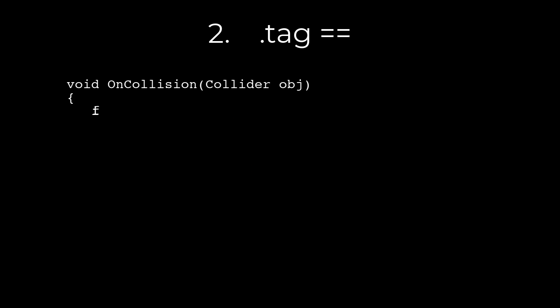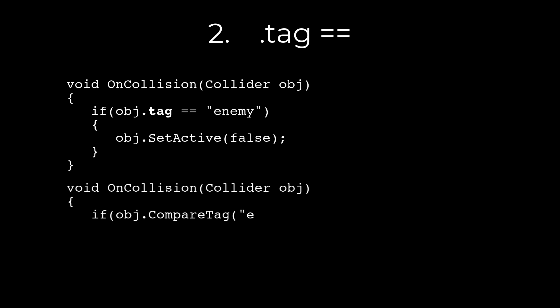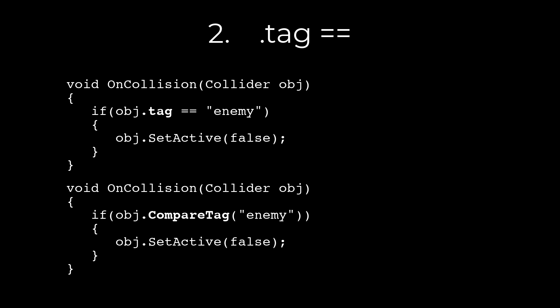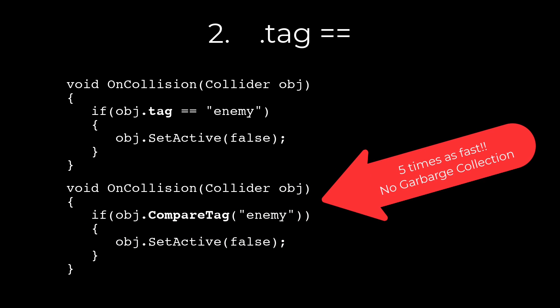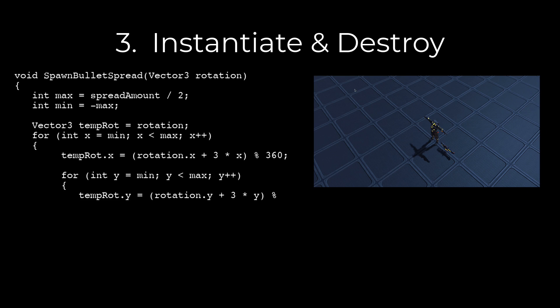Next, there are two ways to compare the tag on a game object. We do this often when we've encountered a physics collision or done a raycast to check if the object we've hit is a particular one — in this case, looking for the tag 'enemy'. Using dot-tag is easy, but did you know that dot-tag is actually more expensive than using the Unity method CompareTag? CompareTag is actually five times faster than dot-tag for comparison, and it doesn't generate anything in memory that requires garbage collection later on.